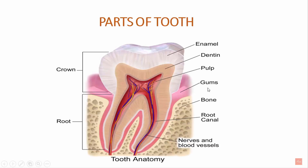In this picture, you can see a tooth cut into cross section and this is how it appears internally. This is the crown portion and this is the root portion. The clinical crown is the part of the tooth that is visible in the oral cavity, and the root is present in the bone. The outer covering of the crown is known as enamel.